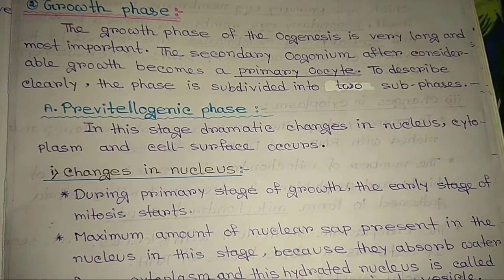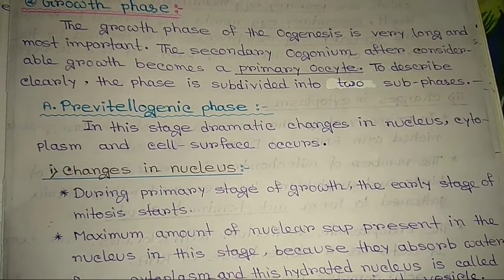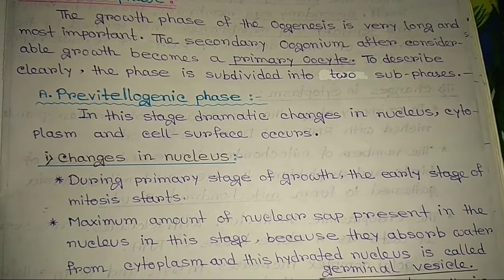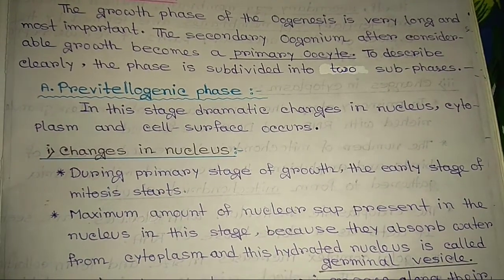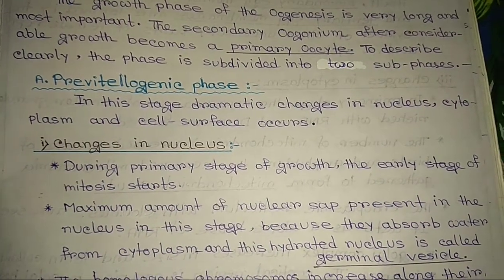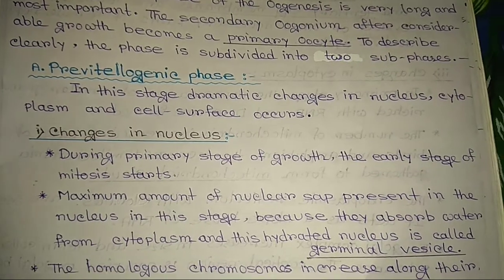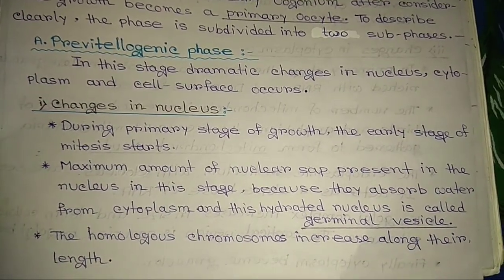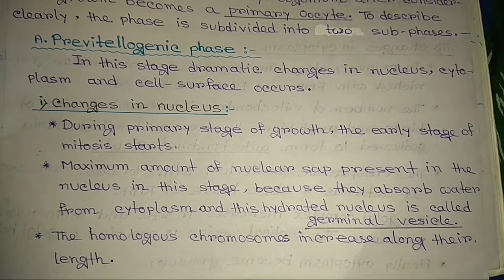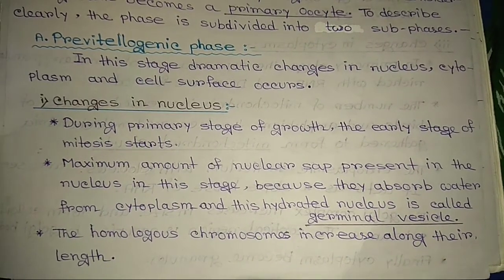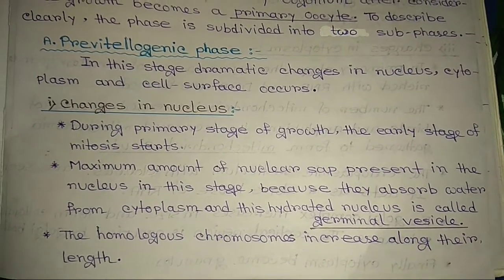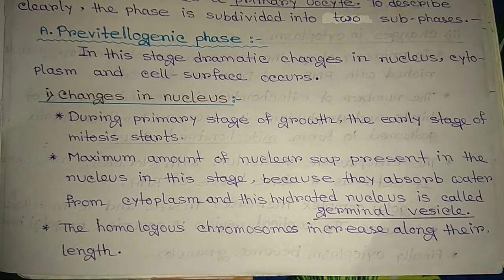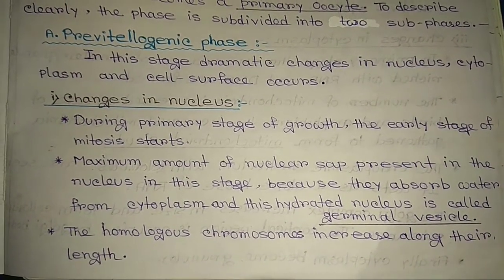In the pre-vitellogenic phase, dramatic changes in the nucleus, cytoplasm, and cell surface occur. Regarding changes in the nucleus: during the primary stage of growth, the early stage of meiosis starts. A maximum amount of nucleoli are present in the nucleus at this stage because they absorb water from the cytoplasm, and this hydrated nucleus is called the germinal vesicle.